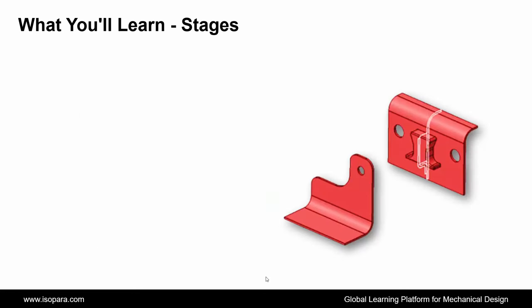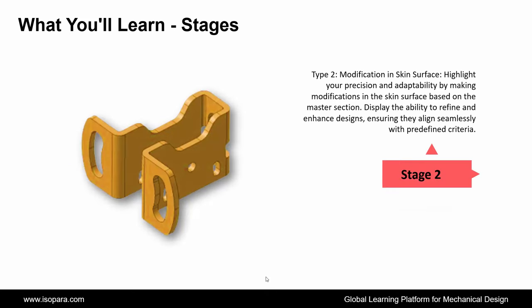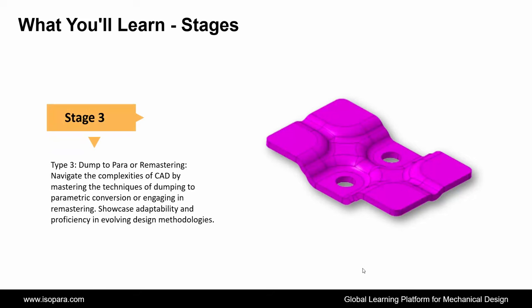Now we see the stages of what you will learn in this course. First is Concept Bracket Creation — showcase your creativity and technical prowess by executing the creation of concept brackets, demonstrating a nuanced understanding of design principles. Second is Modification in Skin Surface — highlight your precision by making modifications in the skin surface based on the master section. Third is Dump to Para or Remastering — master the techniques of dumping to parametric conversion or engaging in remastering, showcasing adaptability in evolving design methodologies.